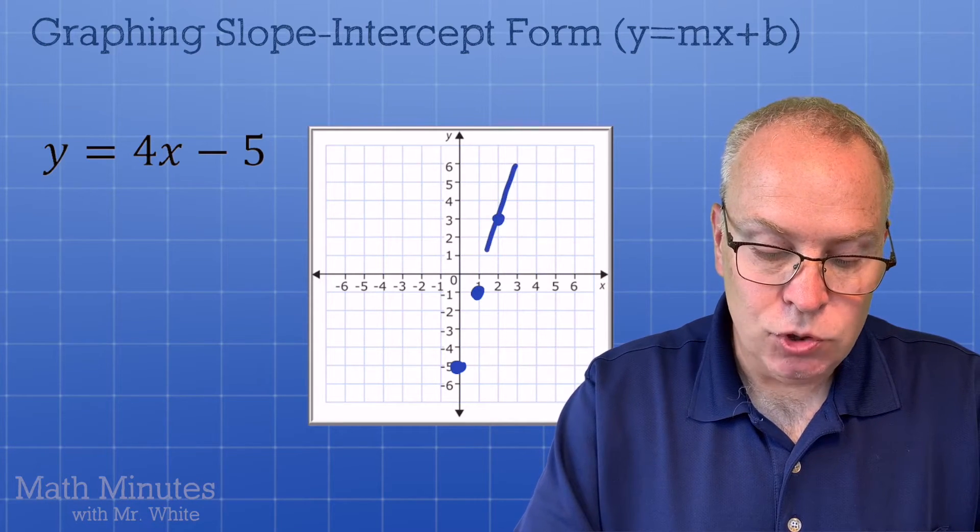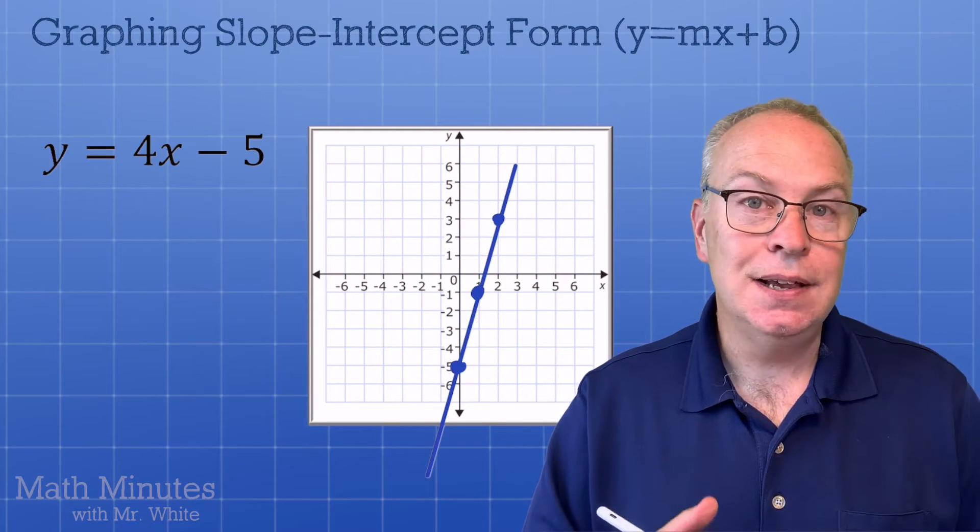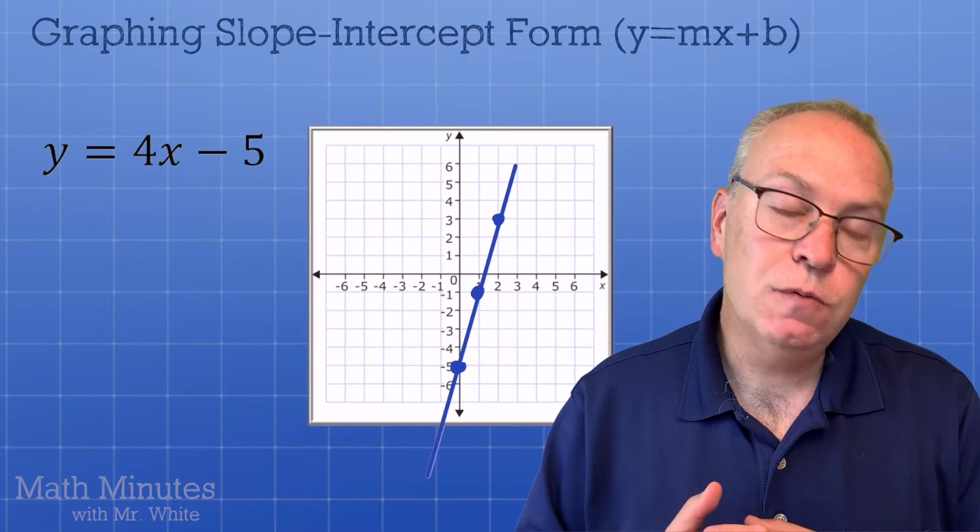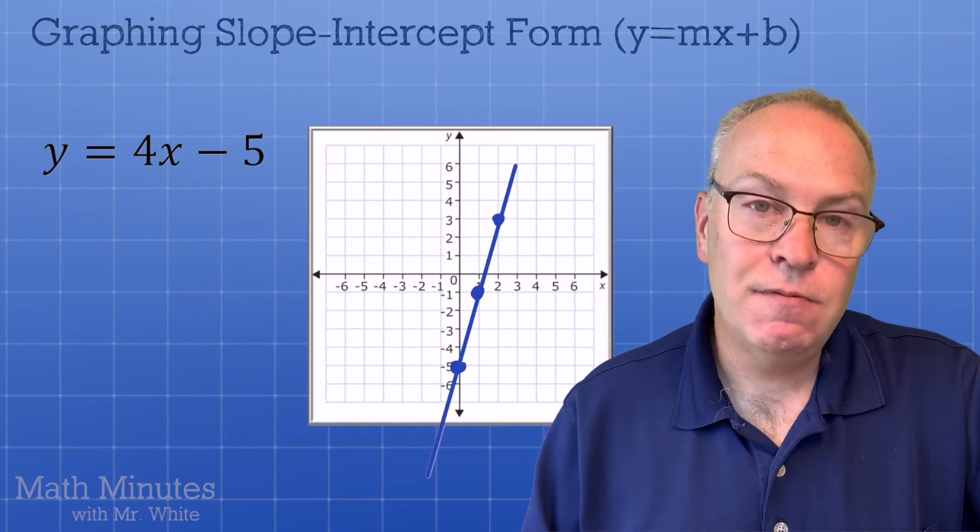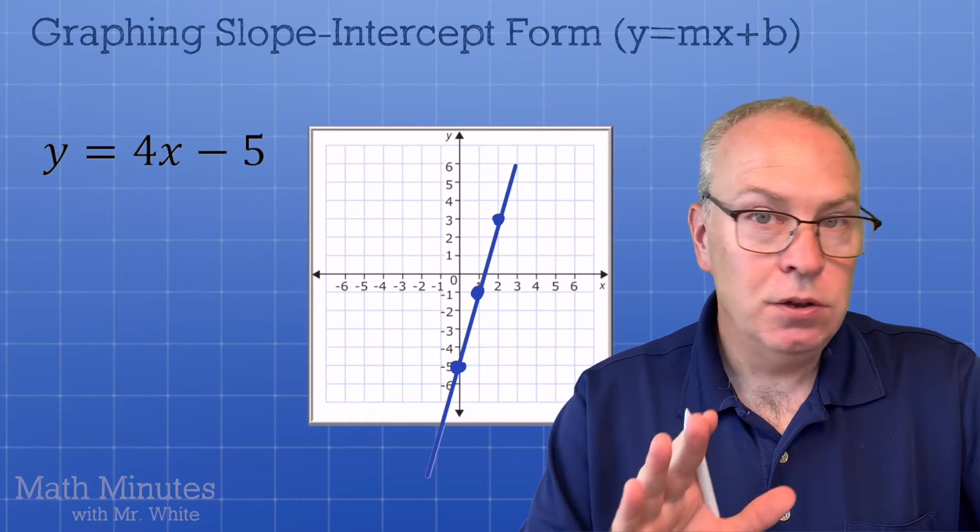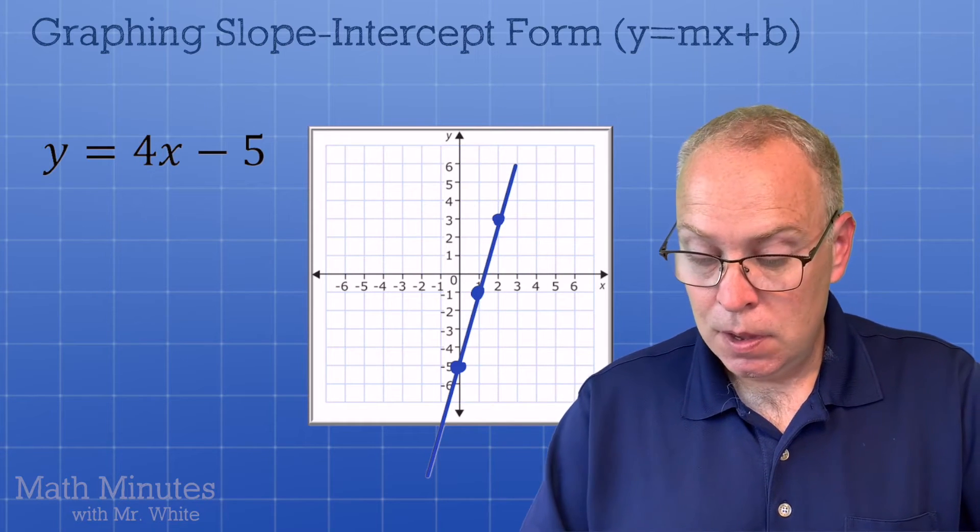And I can now draw a nice straight line through those three dots. And I've graphed my linear function, my linear equation, y equals 4x minus 5. And notice how it's going up and to the right, the positive slope, 4. Don't just go up four. You've got to go up four over one on this example.